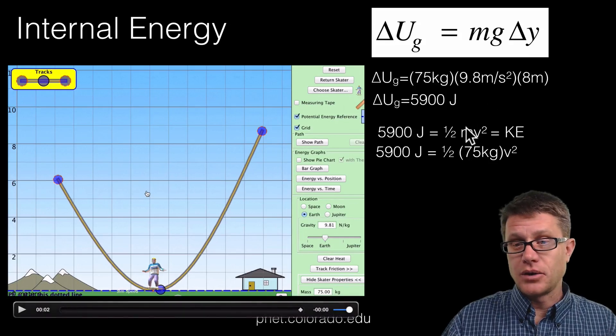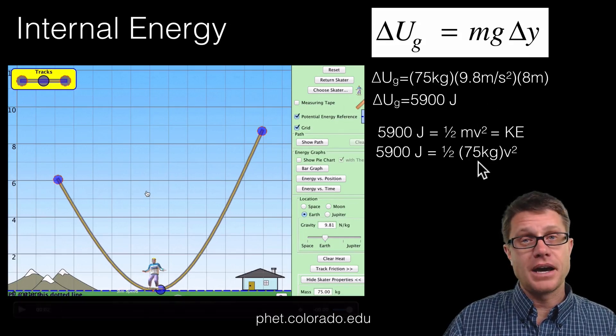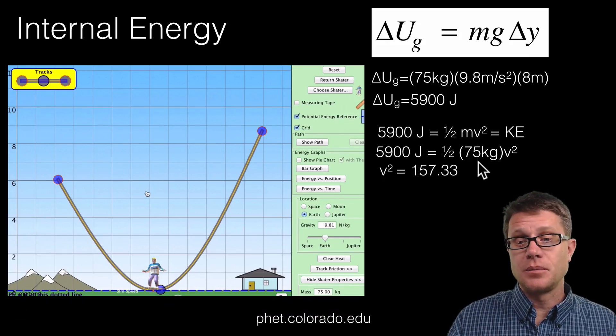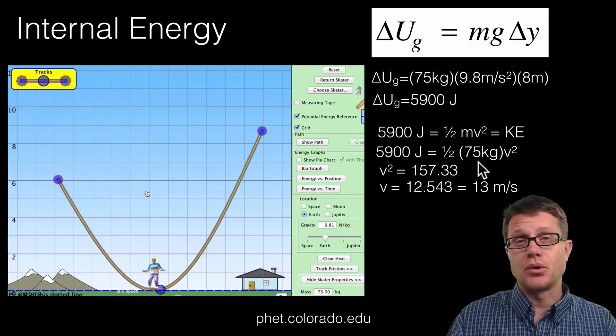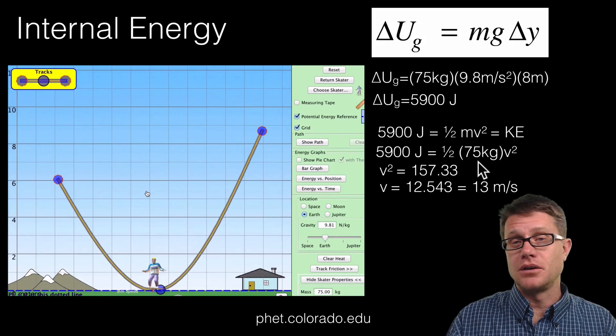We can set that up to our equation right here where we put in the mass of the skateboarder. Then we simply solve for v. Using significant digits at the bottom that skateboarder is going to be going 13 meters per second.